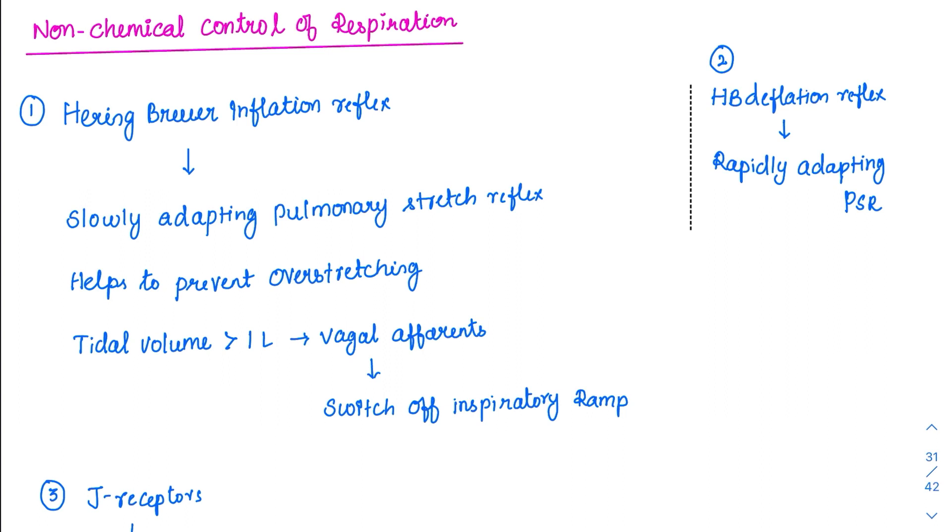What is the normal tidal volume? The normal tidal volume is around 500 ml. But when the tidal volume doubles, when the tidal volume goes beyond 1 liter, it will send vagal afferents and switches off the inspiratory ramp.